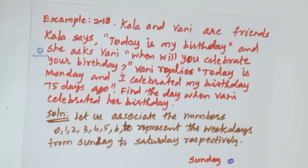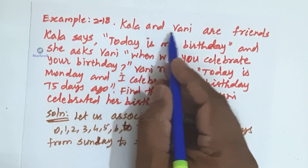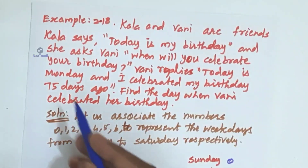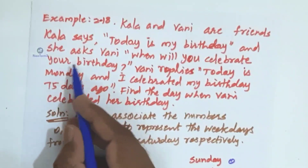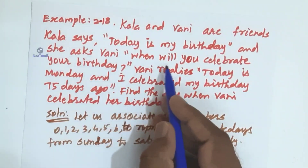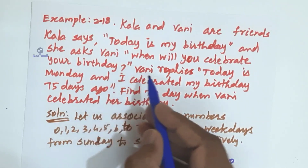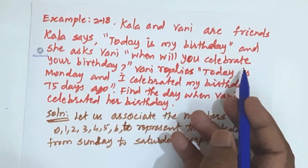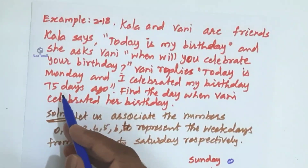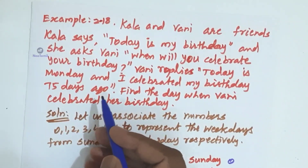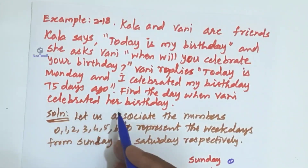Example number 2.18. Kala and Vani are friends. Kala says, today is my birthday, and she asks Vani, when will you celebrate your birthday? Vani replies, today is Monday and I celebrated my birthday 75 days ago. So, find the day when Vani celebrates her birthday.